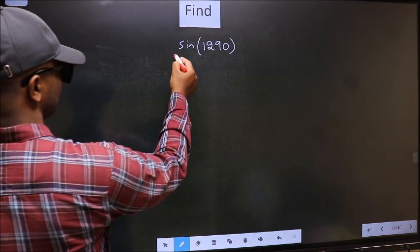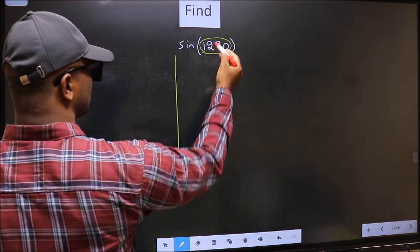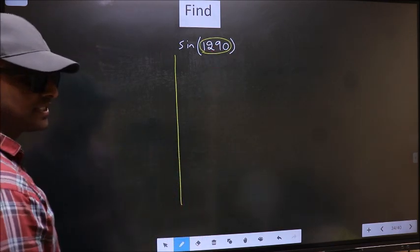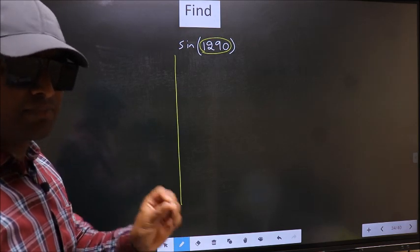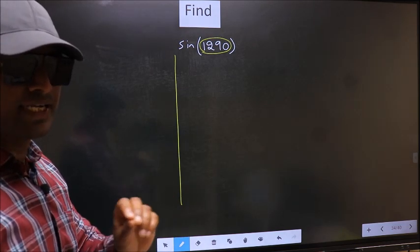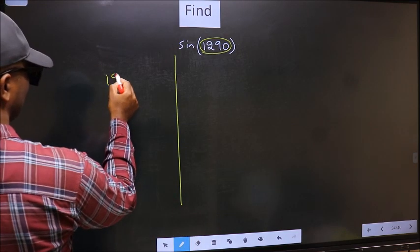See. Here we have 1290. Now you should check. 1290 lies between which multiples of 180? What I mean is 1290.